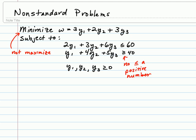So to approach the non-standard problems, one thing we can do is instead of minimizing w equals 3y sub 1 plus 2y sub 2 plus 3y sub 3, we can maximize its opposite. So in other words, we want to say maximize, introduce a new variable, maybe z, equals the opposite of w. That's negative 3y sub 1 minus 2y sub 2 minus 3y sub 3.